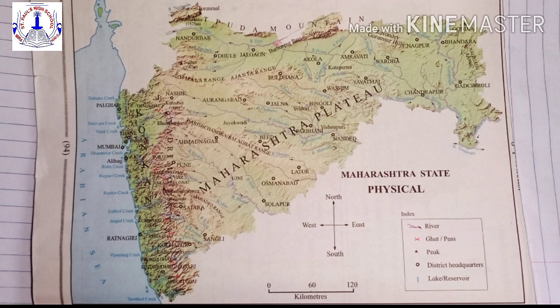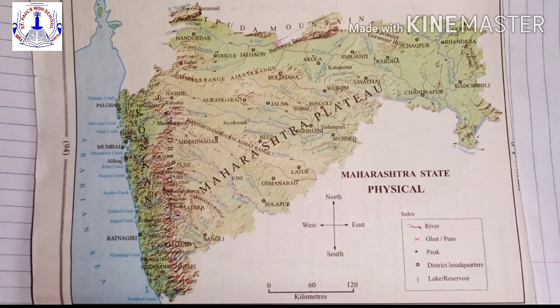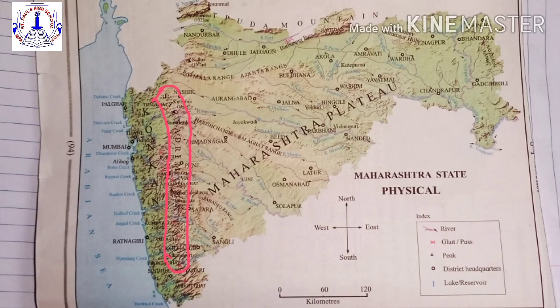Children, I hope you have understood what a physical map is — it shows land, water, and mountains in different colors. Let us observe this physical map of Maharashtra and discuss the question answers. You may refer to your EVS 1 textbook page number 94 for this map and page number 95 for the questions. On the right-hand side below, there is an index showing different symbols used for rivers, ghats, mountains, etc. The first question is: what is the name of the mountain that spreads from north to south in our state? The answer is the Sahyadri Mountains.